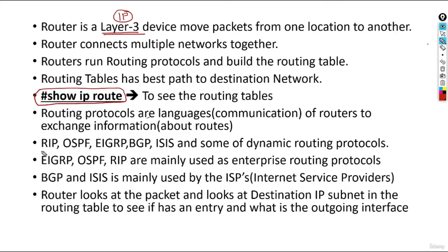Routing protocols are languages or communication mediums of routers — they exchange information and build the routing table. Some well-known routing protocols are RIP, OSPF, EIGRP, BGP, and IS-IS. RIP stands for Routing Information Protocol, ISIS stands for Intermediate System to Intermediate System. EIGRP, OSPF, and RIP are called enterprise routing protocols used by large companies. BGP and IS-IS are ISP routing protocols used by carriers like Bell, Rogers, Verizon, and AT&T. Routers look at the destination IP address in the packet to figure out where to send it.